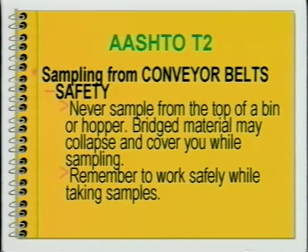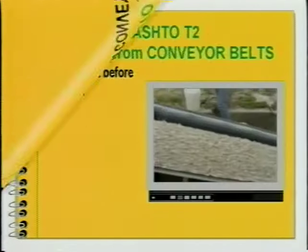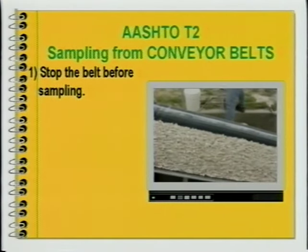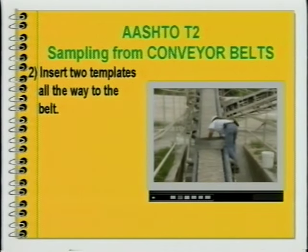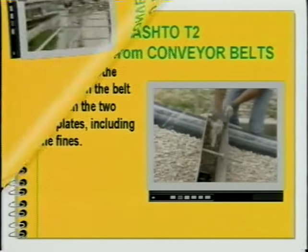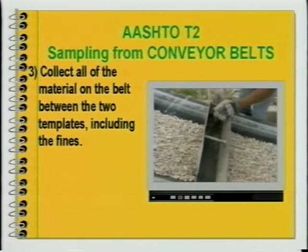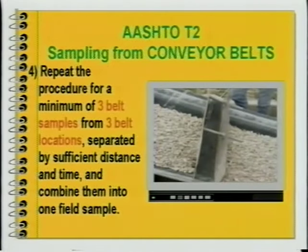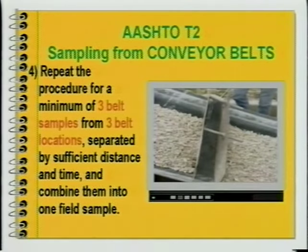Remember to work safely while taking samples. To review sampling from cross sections of conveyor belts: 1. Stop the belt before sampling. 2. Insert two templates all the way to the belt. 3. Collect all of the material on the belt between the two templates, including the fines. 4. Repeat the procedure for a minimum of three belt samples from three belt locations, separated by sufficient distance and time, and combine them into one field sample.